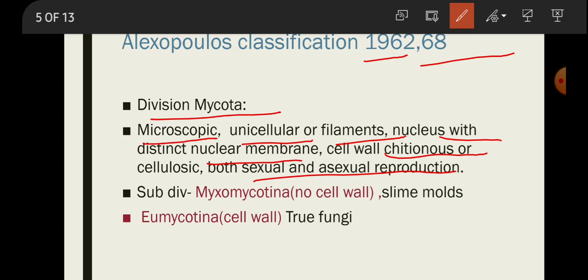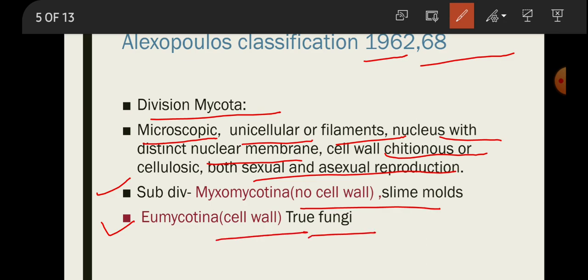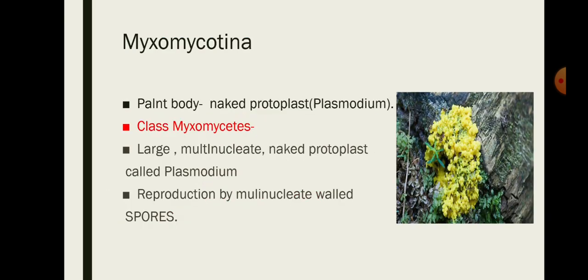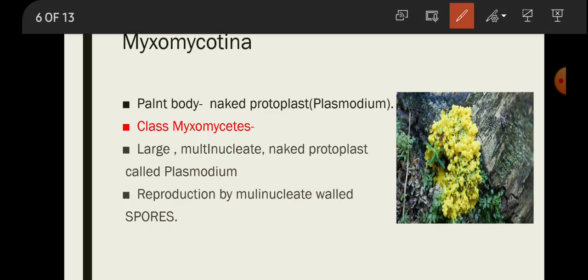Alexopoulos further divided Mycota into two subdivisions: Myxomycotina and Eomycotina. Myxomycotina are organisms with no cell walls — slime molds are an example. Eomycotina have a cell wall and are known as true fungi.